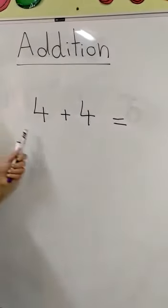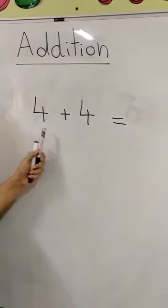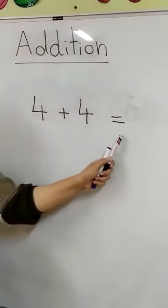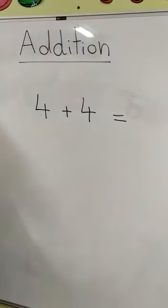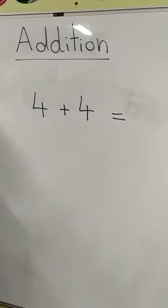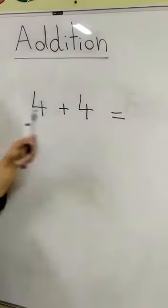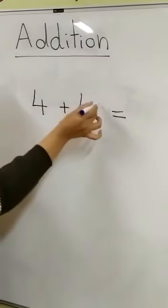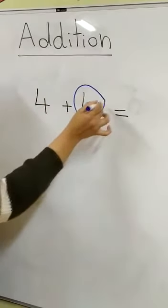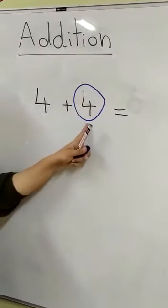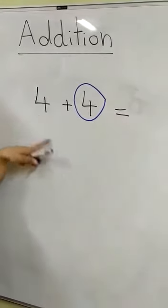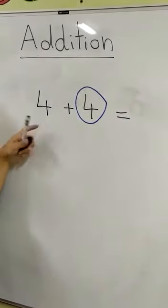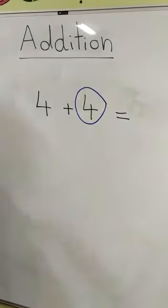Let's read: four plus four equals. Here we don't have a bigger or smaller number, so we will circle any number — let's circle this one. I put the number in the circle in my mind, and I put the other one on my fingers.